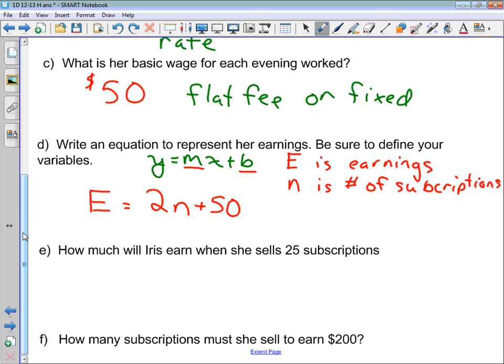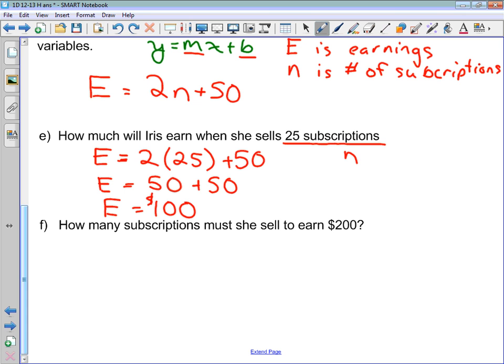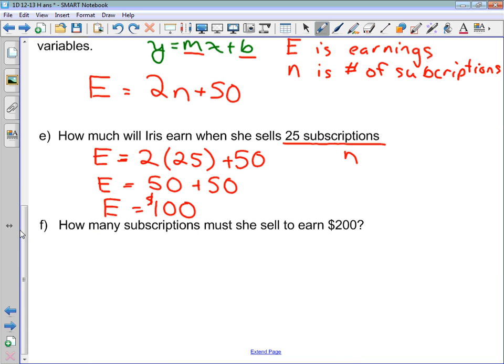Now we've got a couple of questions here where they ask us to use this equation that we've just developed. So how much will Iris earn when she sells 25 subscriptions? Well, 25 subscriptions is a value for N. So let's take our equation here, E equals 2, and we'll substitute 25 for N. And then we'll evaluate. E equals 2 times 25 is 50. 50 plus 50 is going to give us $100. So we're just substituting and evaluating. She's going to earn $100. And we could sort of check this by going back up to the table and thinking, okay, if we go 15, 20, 25, this is going to go 80, 90, 100.